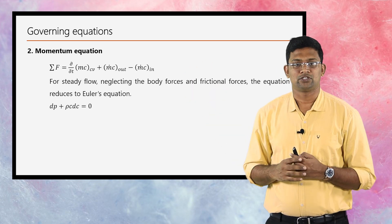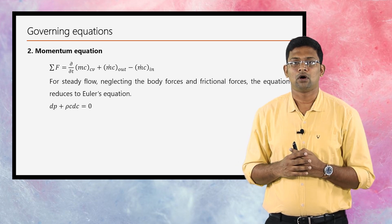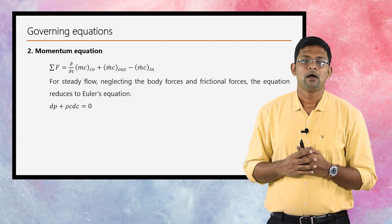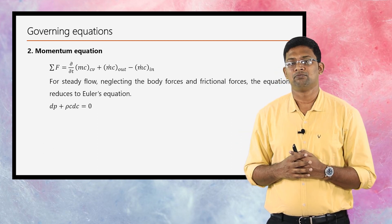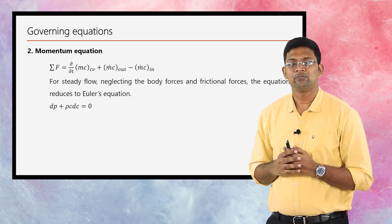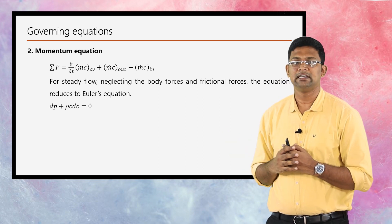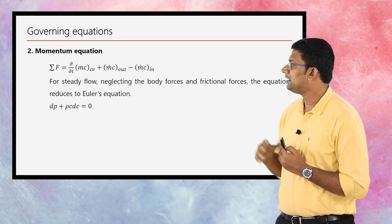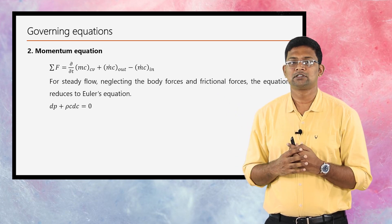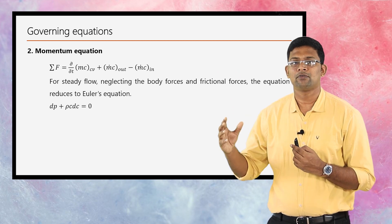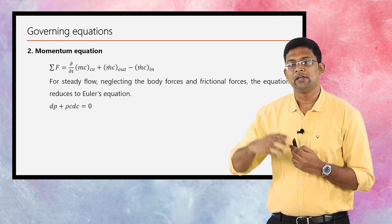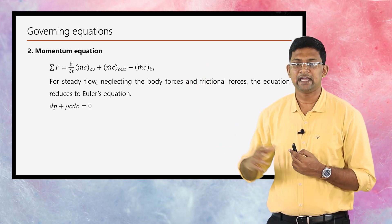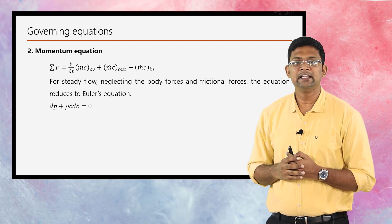The next governing equation is the momentum equation. According to conservation of momentum, the sum of forces equals the rate of change of momentum within the control volume plus the difference between incoming and outgoing momentum flux. For a steady process the time-rate term becomes zero, and if we neglect frictional forces as well as body forces, this equation reduces to the famous Euler's equation: dP + ρC dC = 0. This is the second governing equation.